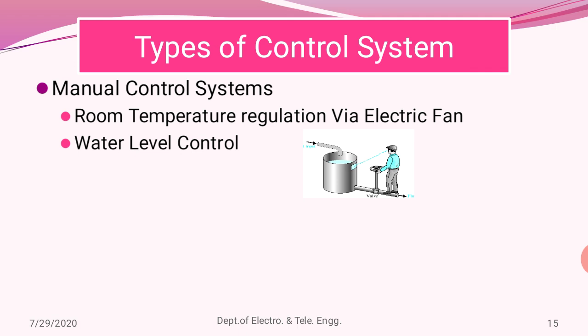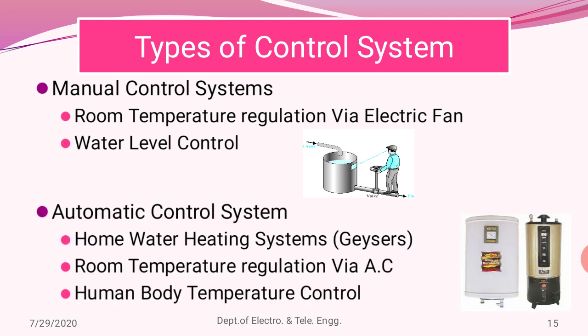Control systems can also be classified based on application into manual and automatic control systems. A basic example of a manual temperature control system is an electric fan, where room temperature can be controlled by operating an electric switch by a human. There can also be a manual water level controller. In contrast, automatic control systems operate automatically, with examples including motor heating systems, room temperature regulators, stabilizers, and monitoring of human body temperature.